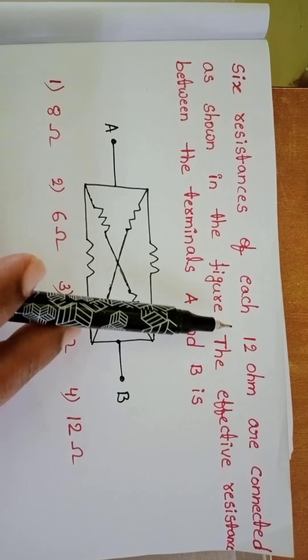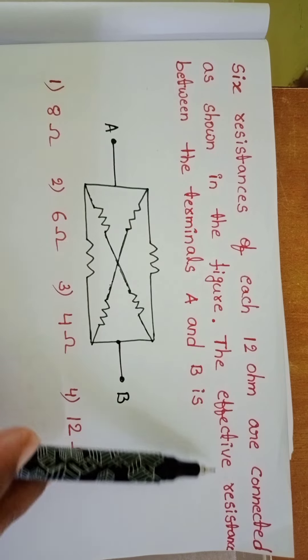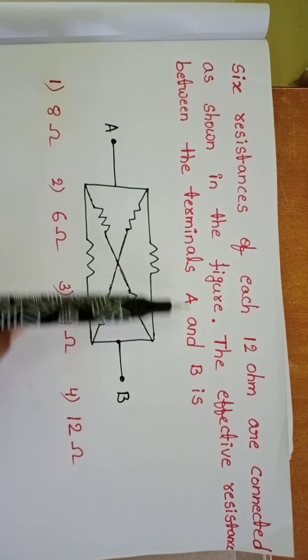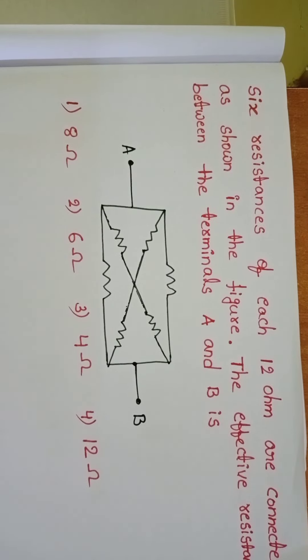Six resistances of each 12 ohm are connected as shown in the figure. The effective resistance between the terminals A and B is. So, once observe the given circuit diagram.